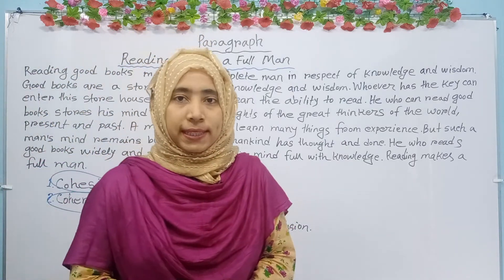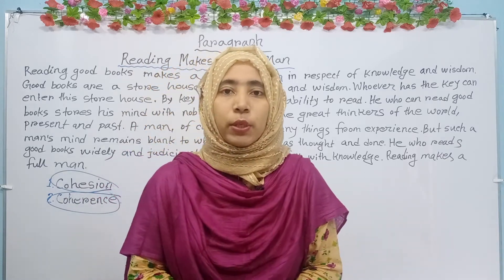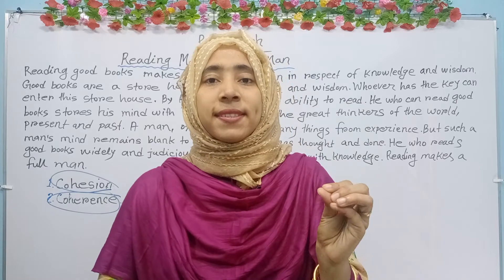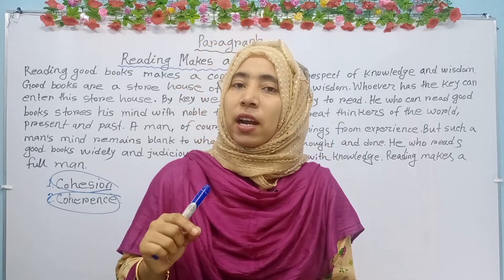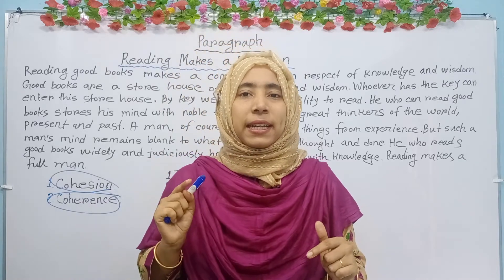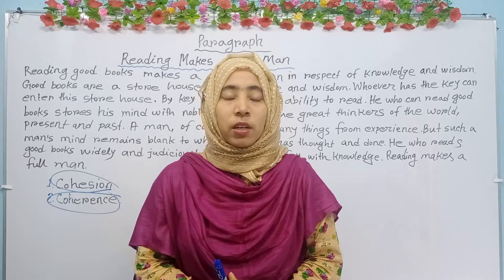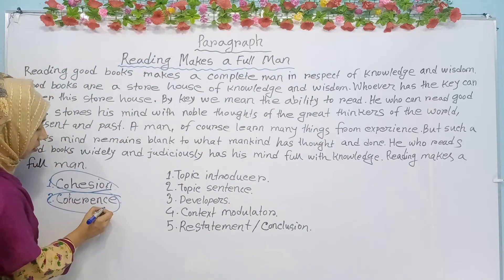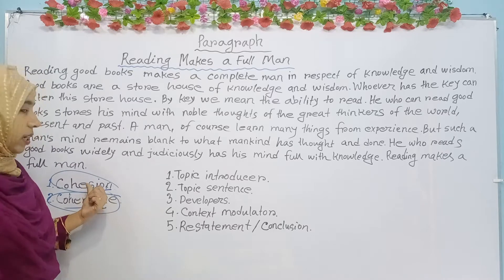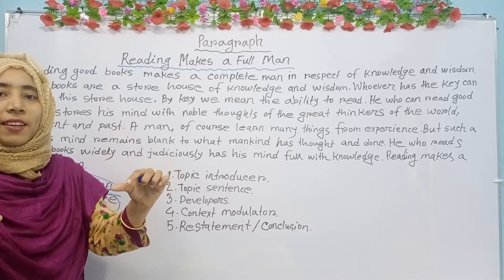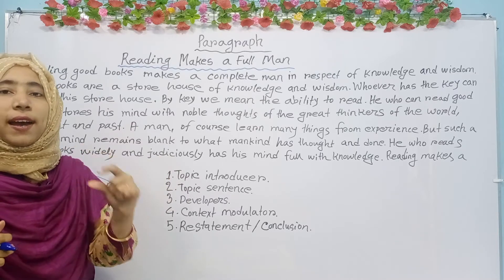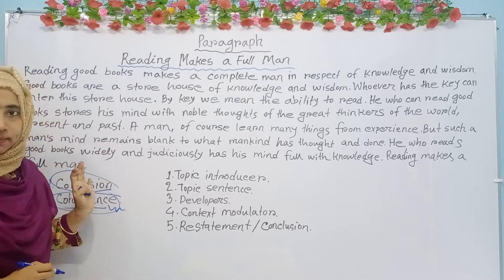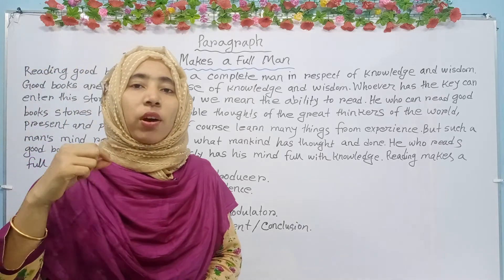Suppose you want to make a building. What do you need? For making a building you need some bricks, cement, iron, sand, etc. But bricks, cement, iron, sand — these are only the elements for making a building. Our main target is the building. Coherence is compared with the building, and cohesion is like the elements such as bricks, cement, iron, and sand. So here coherence is more important than cohesion.